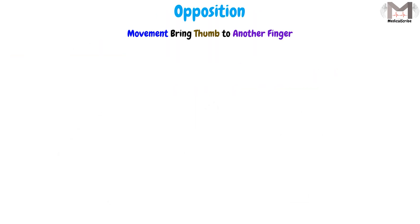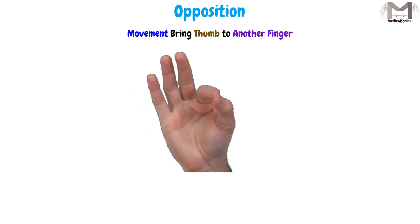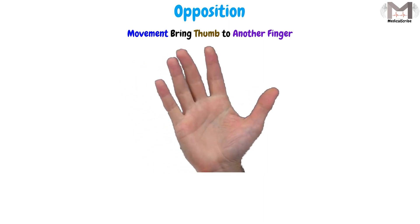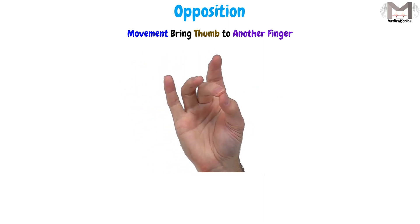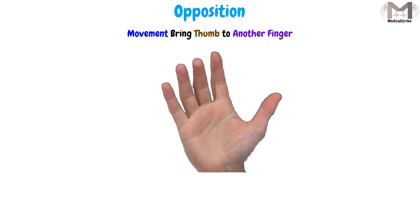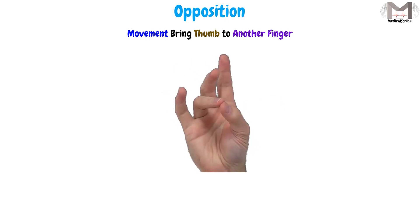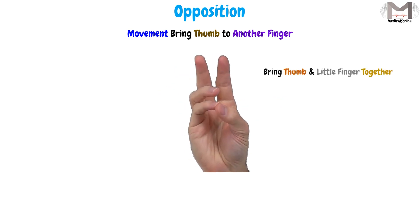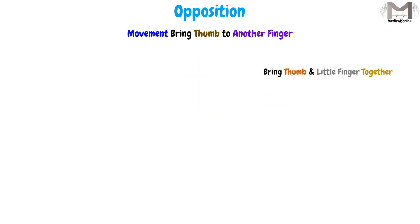The opposition is the movement that will bring and approximate the thumb — which is the first digit of the hand — to another finger of the same hand. Like when we bring the thumb and the little finger together.